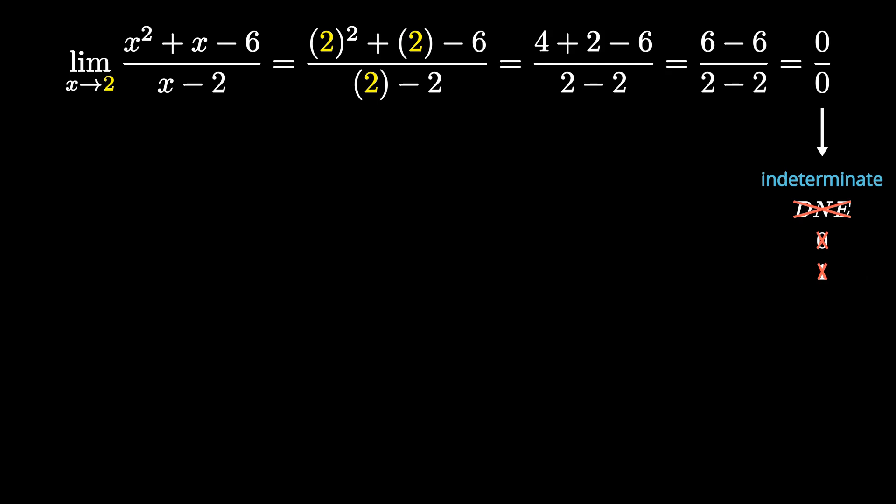It's just a special case, and it's important to note that we can't leave it as 0 over 0. We can't say the limit is 0 over 0 and call it done — we can't do that.